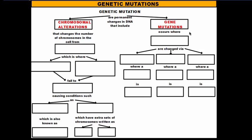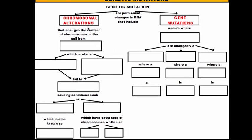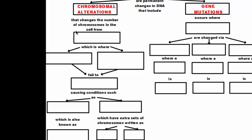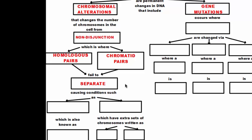We'll start off with chromosomal alterations. Chromosomal alteration basically changes the numbers of chromosomes in a cell from a process called nondisjunction. Nondisjunction is where we have either homologous pairs, like we do in meiosis 1, or chromatid pairs, as we do in meiosis 2, fail to separate like they should in anaphase. When they fail to separate, it throws the numbers off. Because of this failed separation, we can cause conditions such as Down syndrome, which is known as trisomy 21, which we'll get to a little bit later.